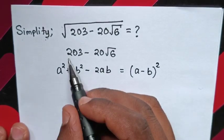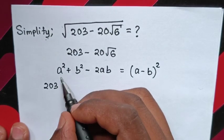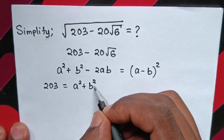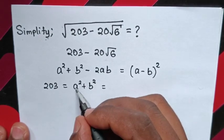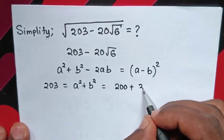We will start to compare 203 is equal to a square plus b square, which is equal to a square is 200 plus b square is 3.